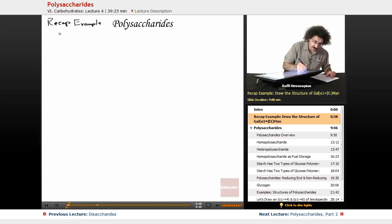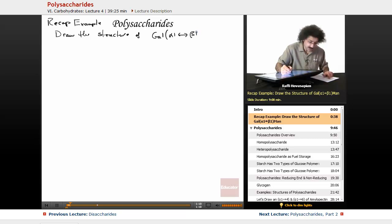Okay, so a recap example. We would like you to draw the structure of galactose alpha 1 beta 1 mannose. So the glycosidic bond between the galactose and the mannose is going to be the alpha 1 carbon of the galactose, the beta 1 configuration of mannose. Let's go ahead and draw this out. So the first thing I'm going to do, I'm going to start off by drawing the linear structures and then the rings, and then I'll put the rings together. So it's always a great way to do it like this. This way you're always nice and systematic.